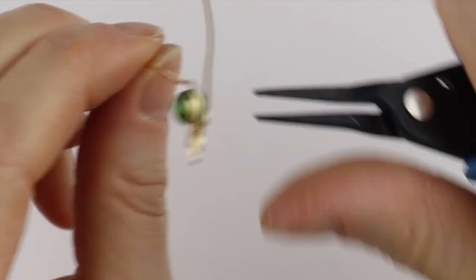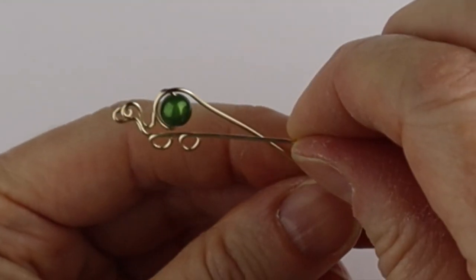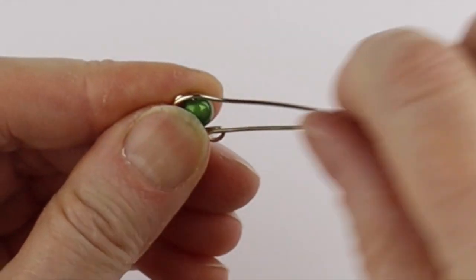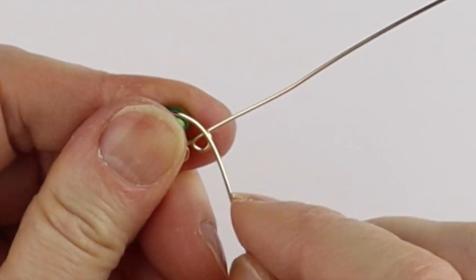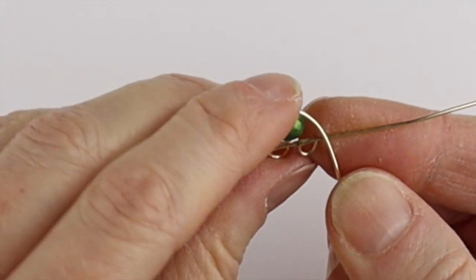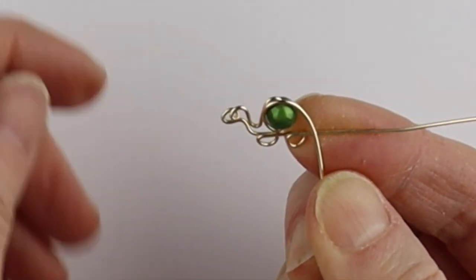Then we're just going to take the needle nose pliers and bend it across. So this is what you have so far, and then we're just going to smooth it out a little bit more.